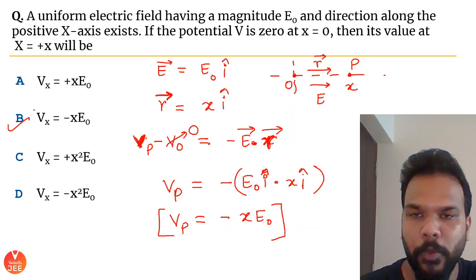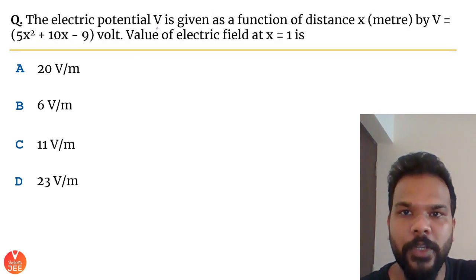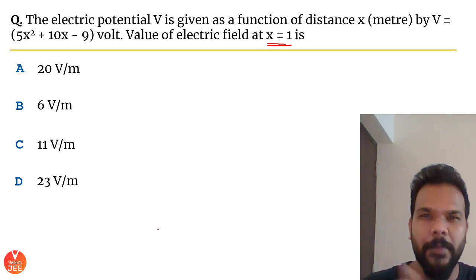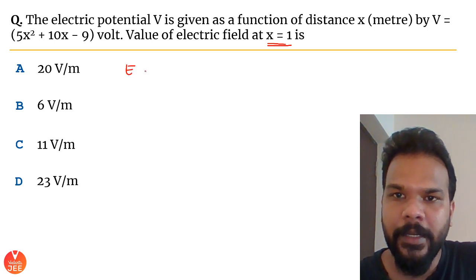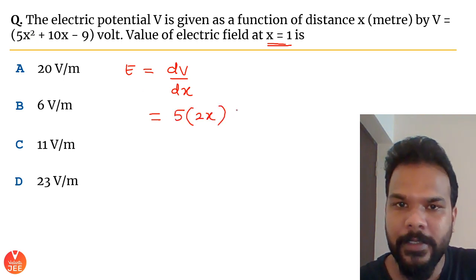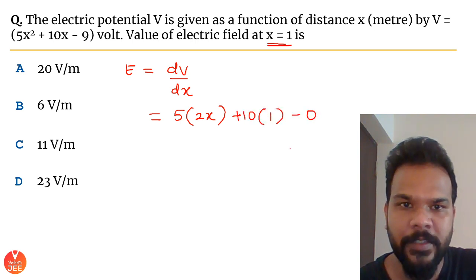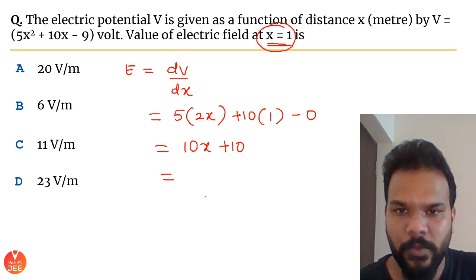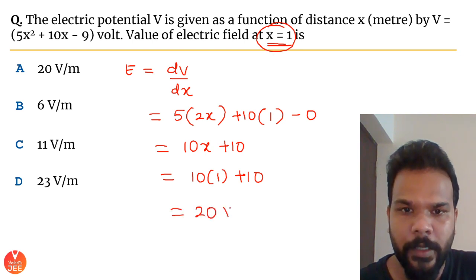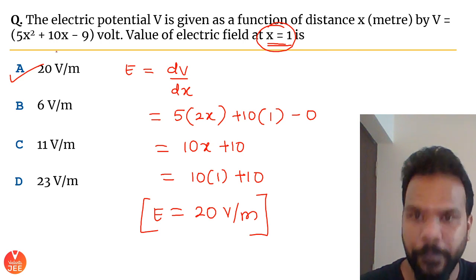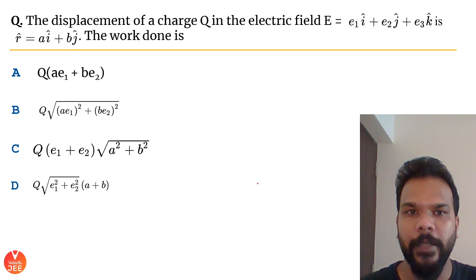Question 4: The electric potential V is given as a function of x as V = 5x² + 10x. Find the electric field at x = 1. The magnitude of electric field is |dV/dx|. Differentiating: dV/dx = 10x + 10. At x = 1: E = 10(1) + 10 = 20 V/m. The answer is option A: 20 V/m.